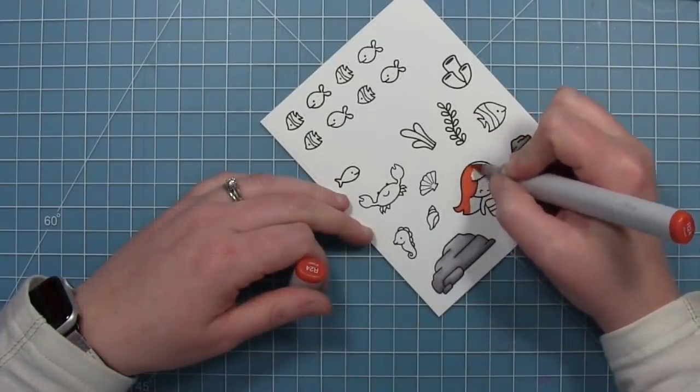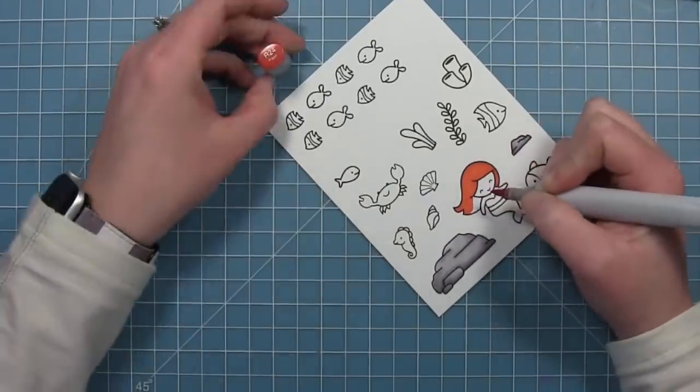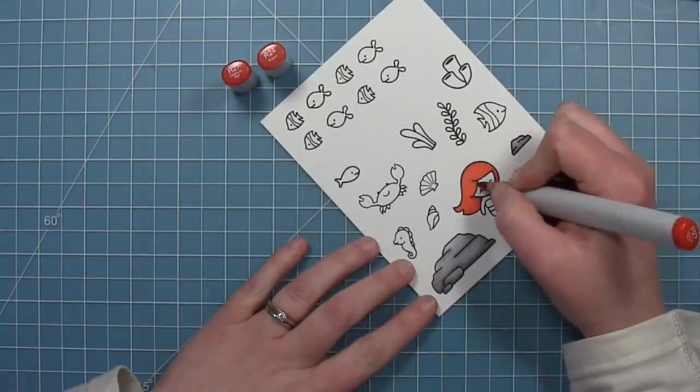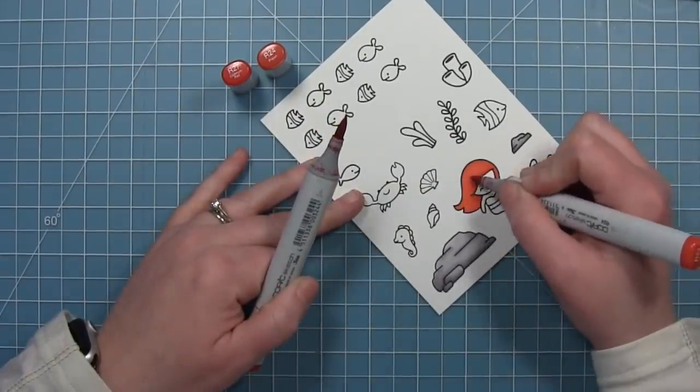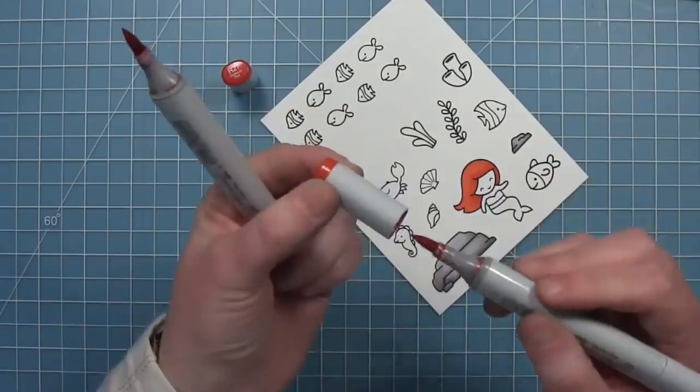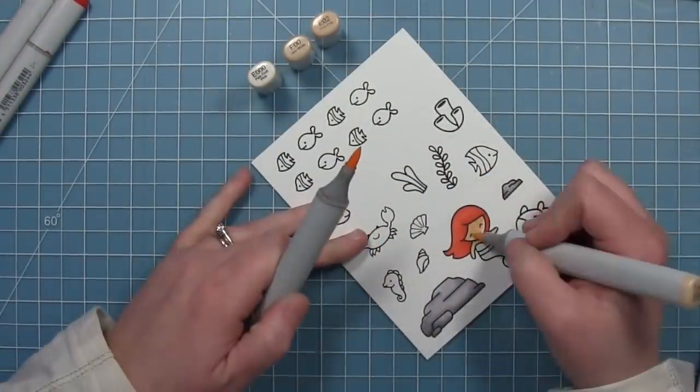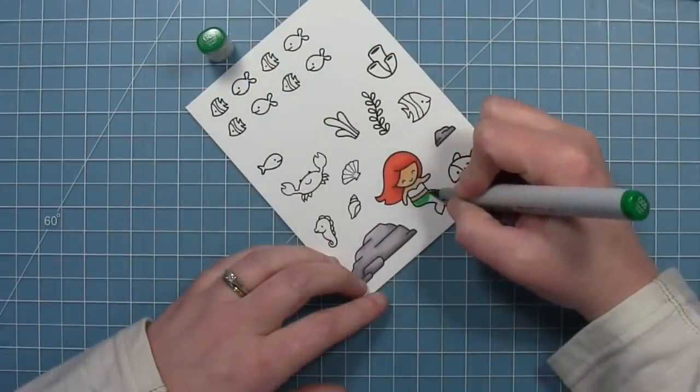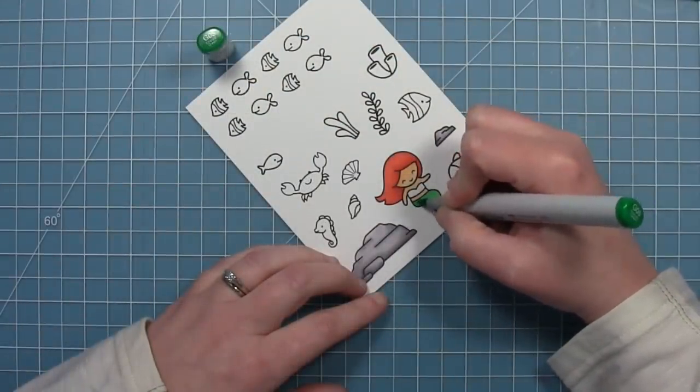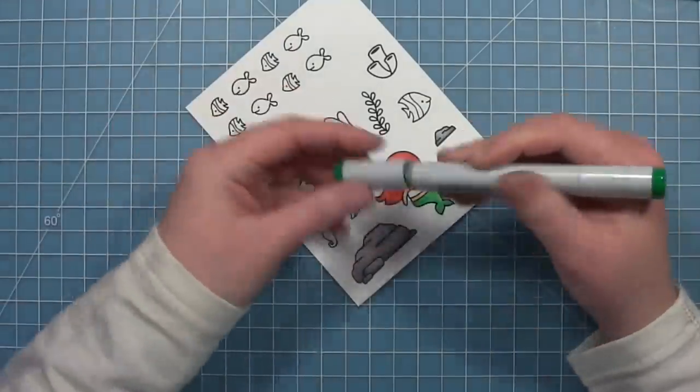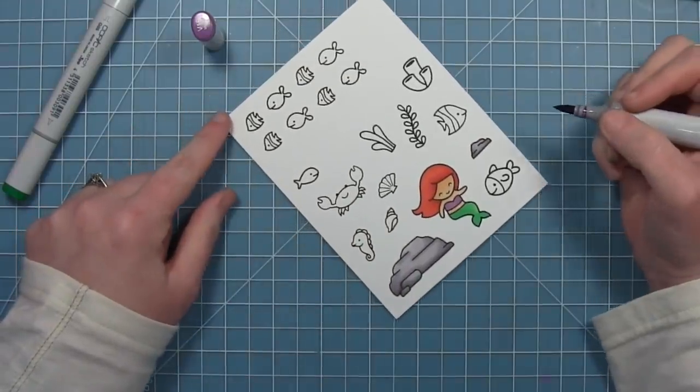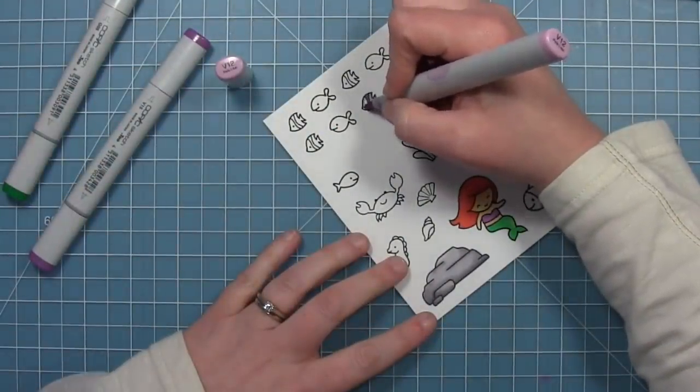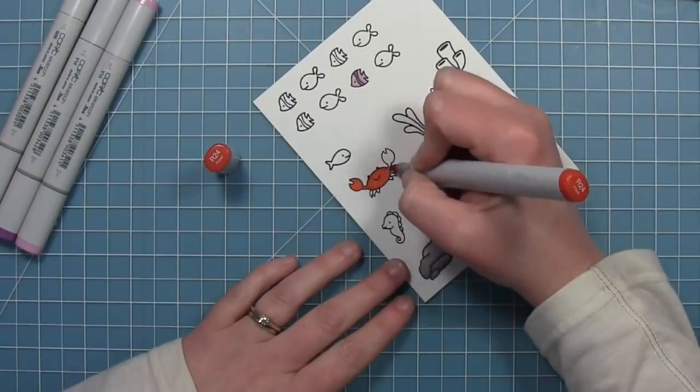And of course, since this is a Little Mermaid inspired kind of card, I'm going to color my mermaid to look like Ariel. So I did figure out what I'm going to do, which fish I wanted in which color kind of beforehand when I was figuring this out. So that's why I started with the purple one there.